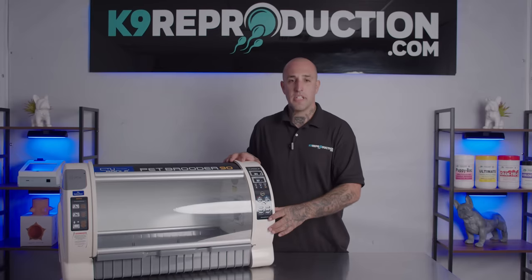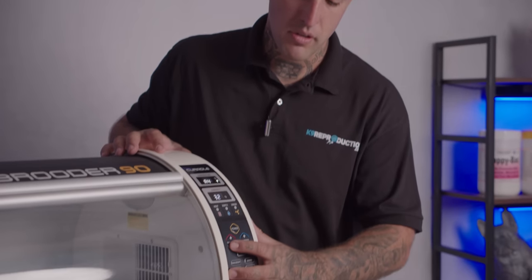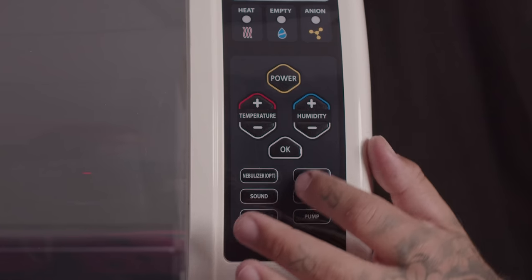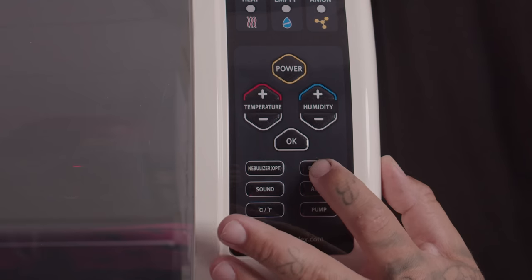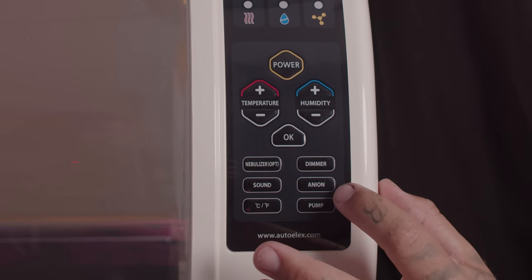The key features of the Curatal Pet Brooder 90 include temperature control, humidification control, nebulizer control, light control inside the incubator, as well as air recirculation control.